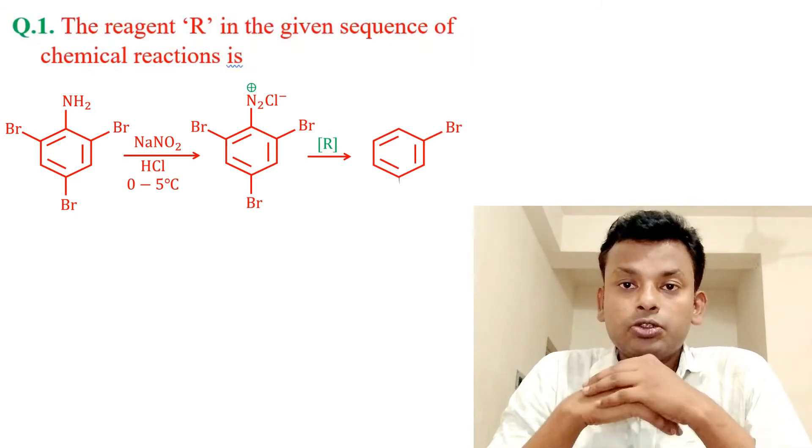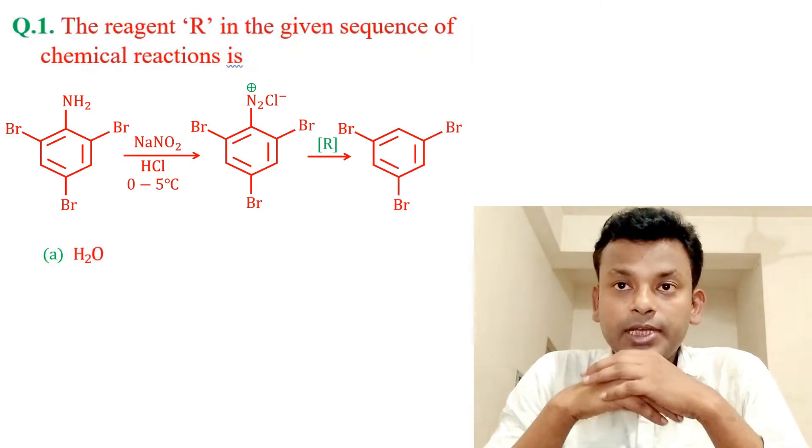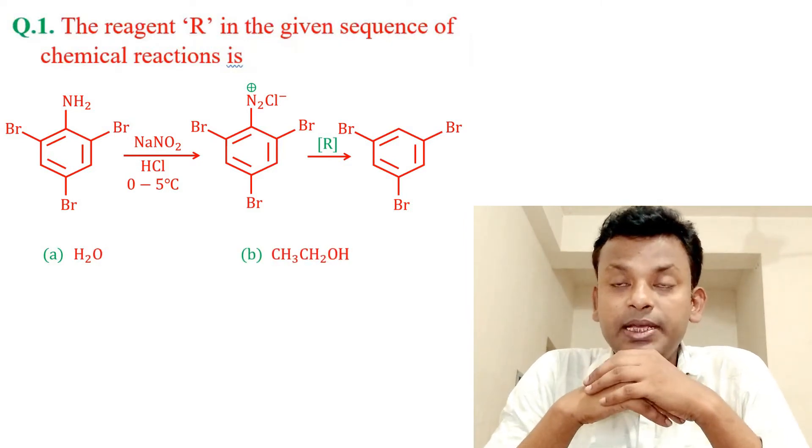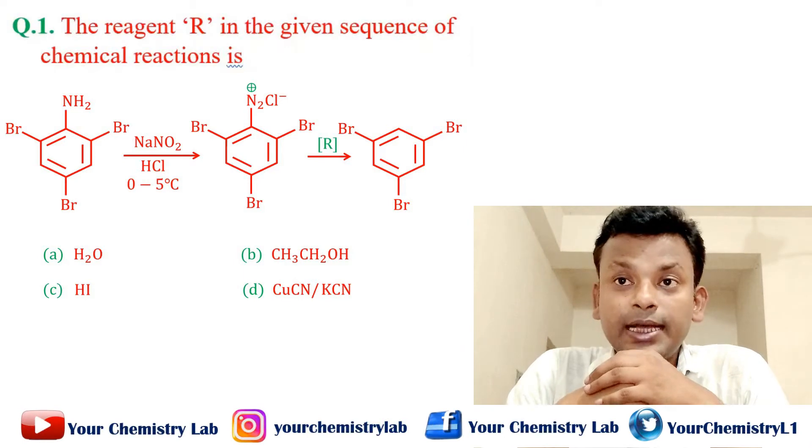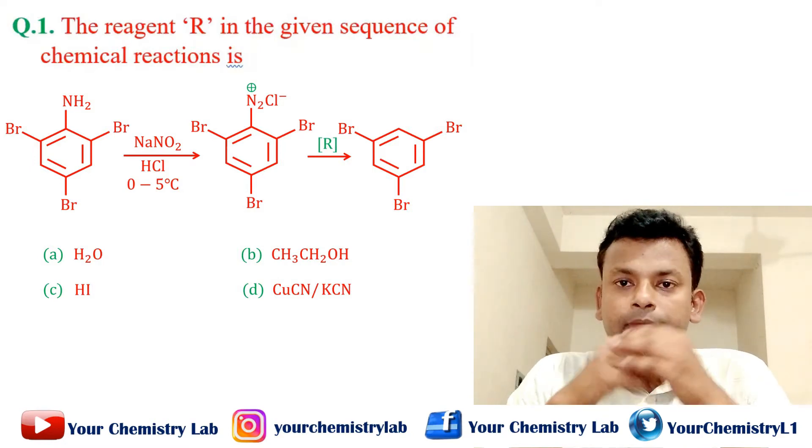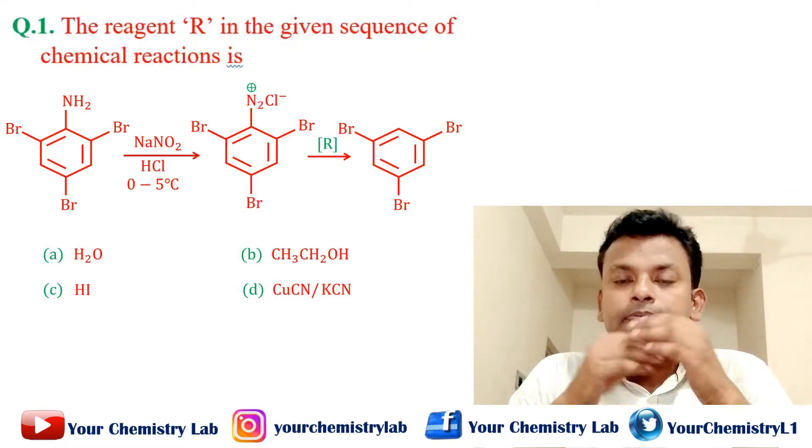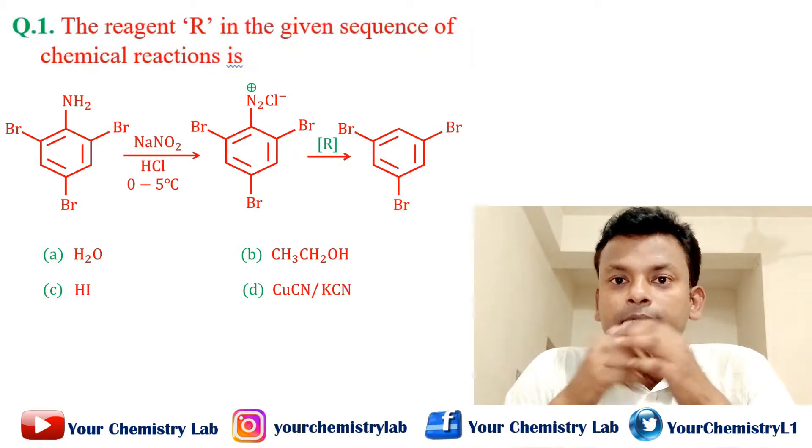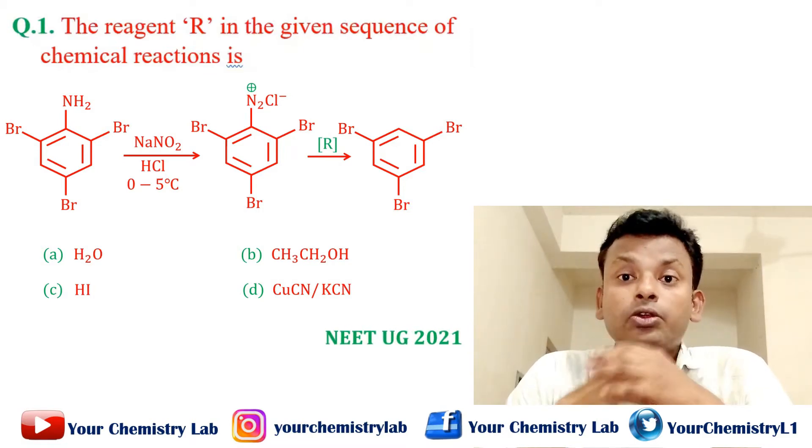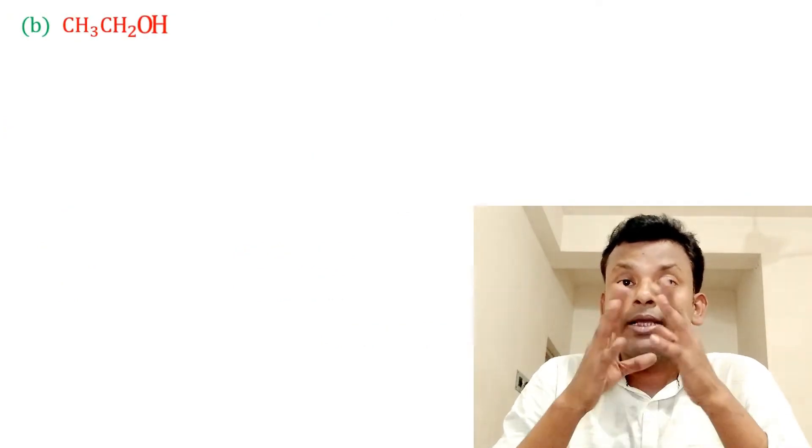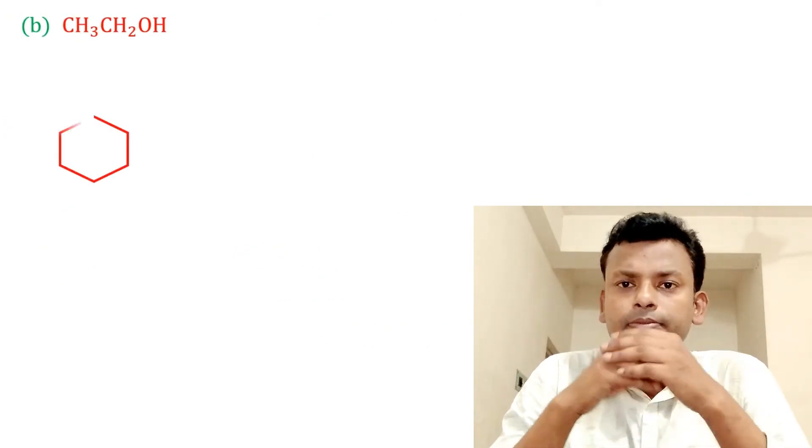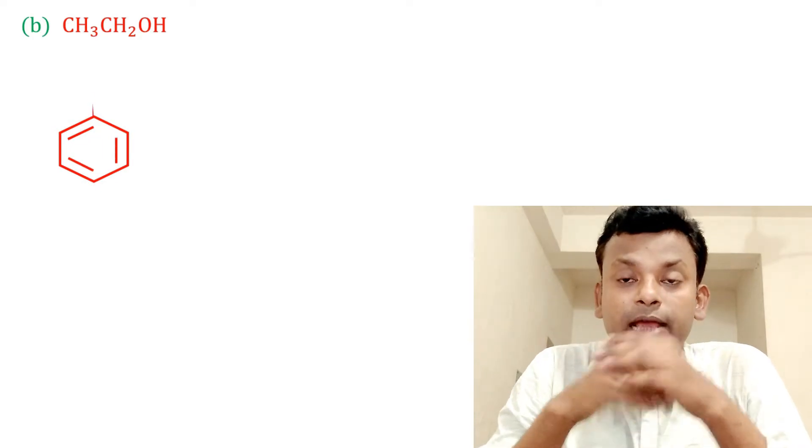So, option A is H2O, option B is CH3CH2OH, option C is HI, option D is CuCN KCN. Which one is correct option? And this question was set in NEET exam 2021. Answer: option B is correct answer.